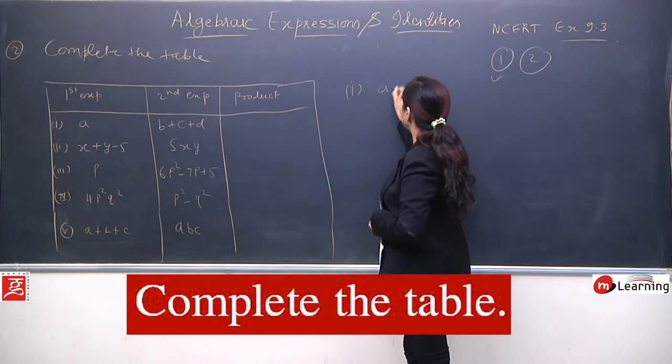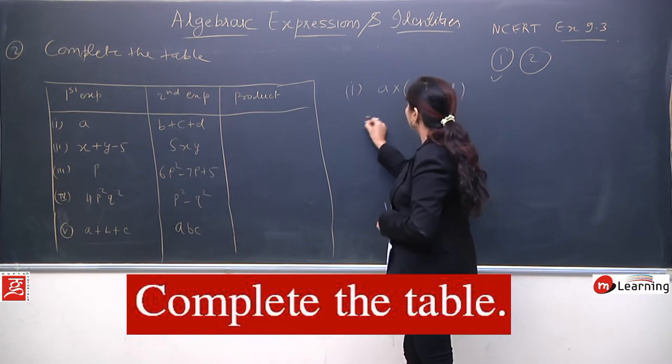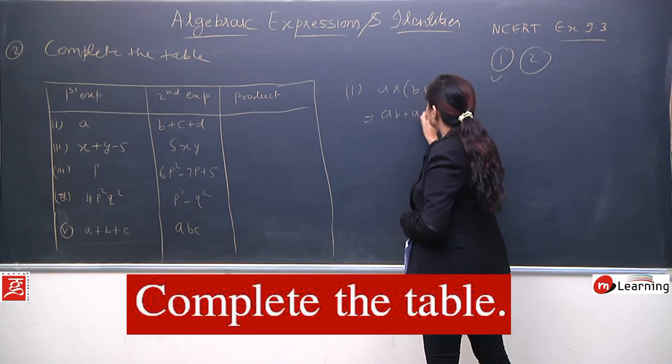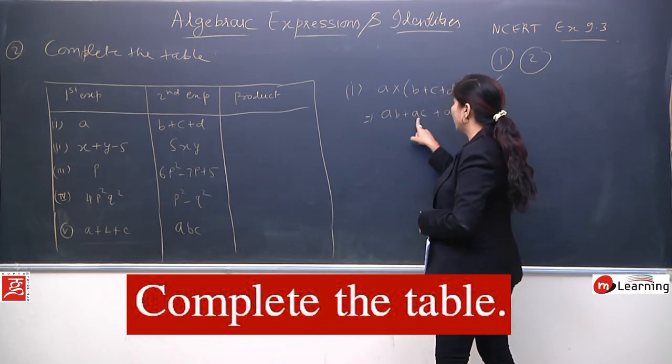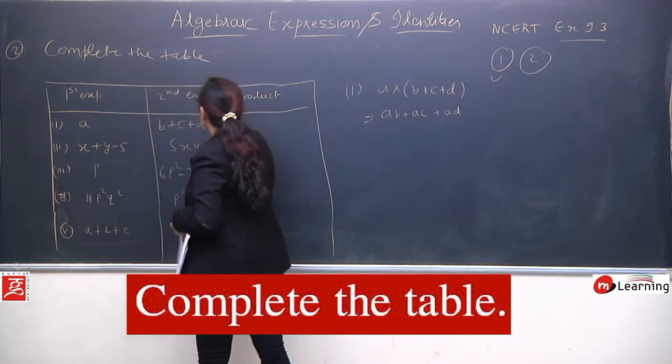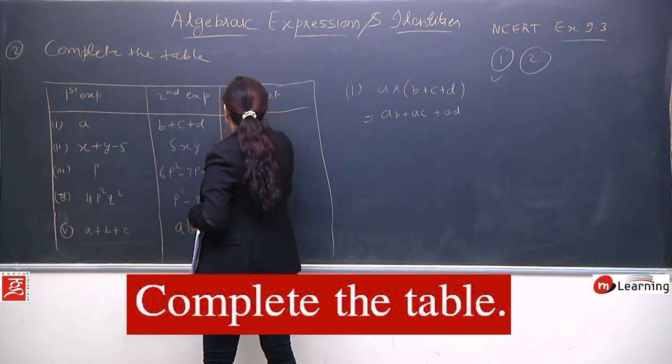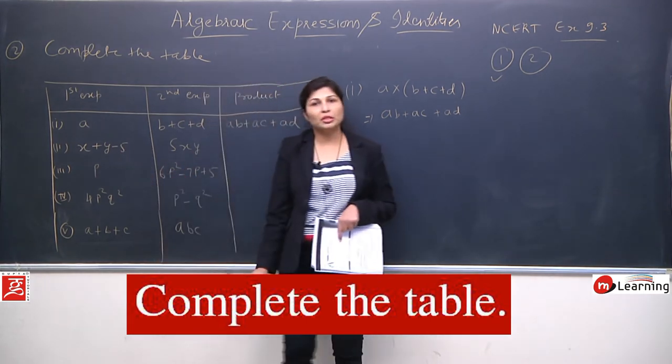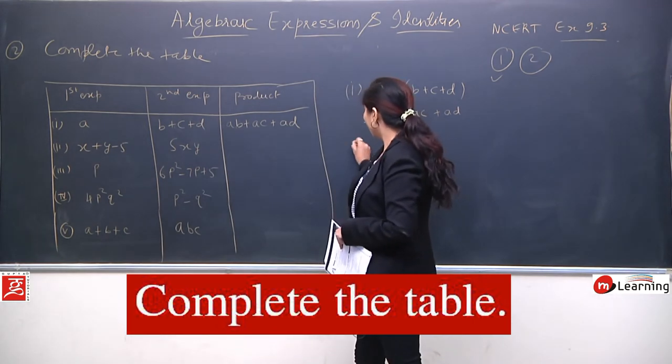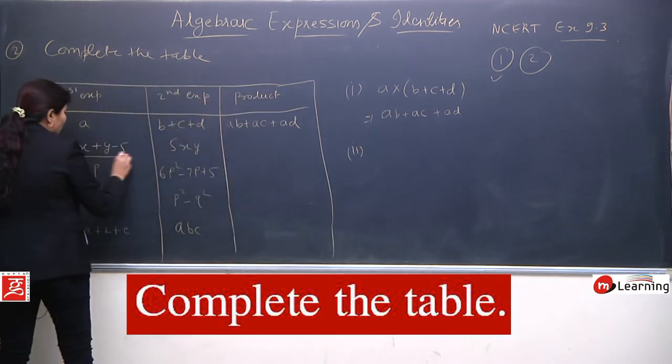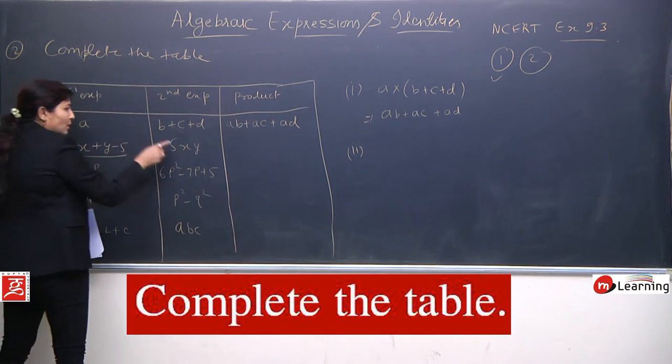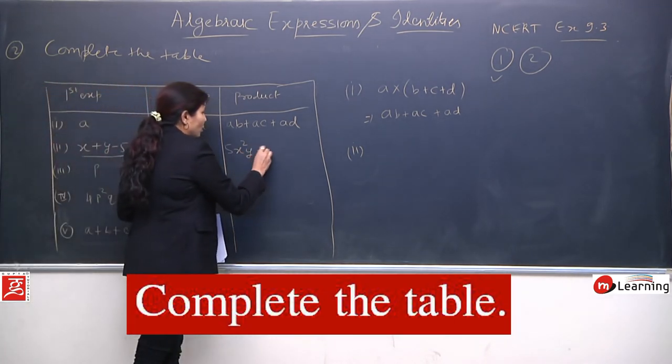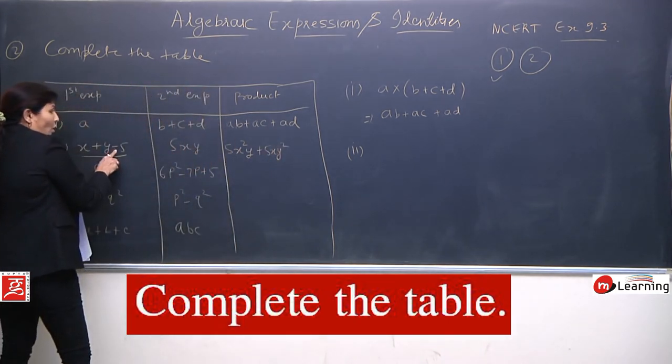Actually you should become so comfortable that you can directly multiply. But still we will see this step by step. We have to multiply these two. It means what is given? b plus c plus d. How do we multiply? a with this, this, and this by the property of distributive. So it will give you ab plus ac plus ad. a multiplied by b, a by c, and a by d. But you should become so habitual that you can directly multiply here. ab, ac and ad. So it will give you 5xy² and minus 5 when multiplied with this gives minus 25xy.